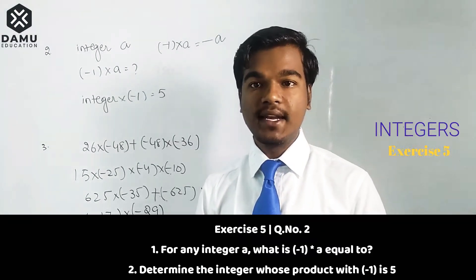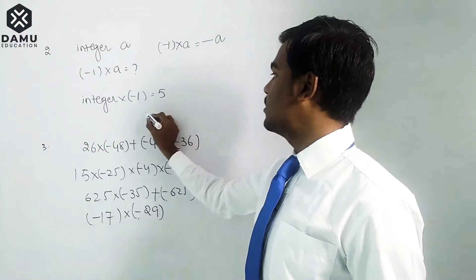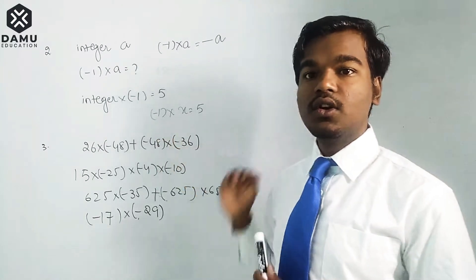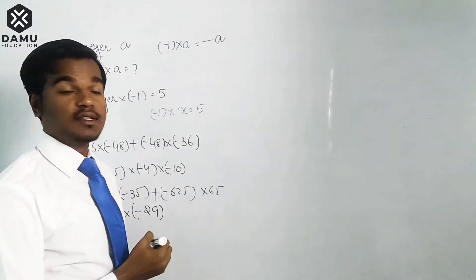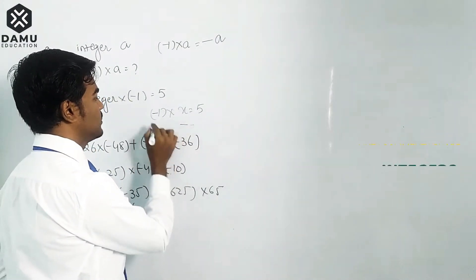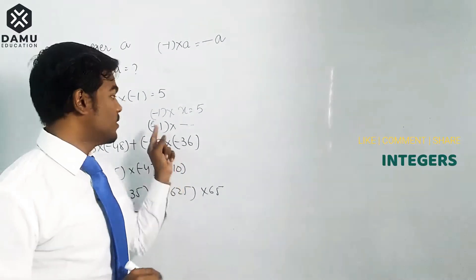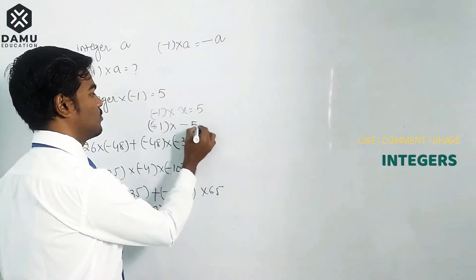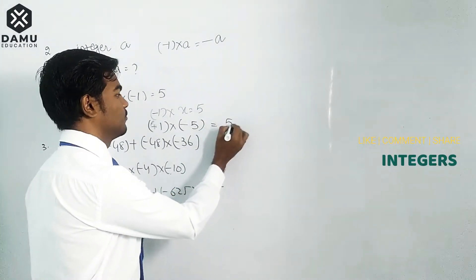Next, what integer should be multiplied with minus 1 to get plus 5? Let's take minus 1 into x equals 5. To get a positive answer, we need minus into minus. So minus 1 into minus 5 gives plus 5. Therefore, 1 into 5 equals 5, so minus 1 into minus 5 equals plus 5.